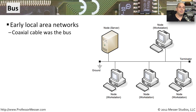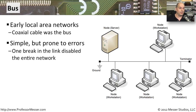A bus topology was extremely common in early ethernet networks — it's one we really don't see much any longer. It allowed us to take a single coaxial cable and extend it from one end of the building to the other and simply connect everybody into that one piece of coax. The problem is that if you have a break anywhere along this connection, it's broken for everyone on the network. We don't see bus networks around much anymore, but if you look into wall connectors, sometimes you'll see remnants of an old coax network from the days when we used bus-based ethernet.